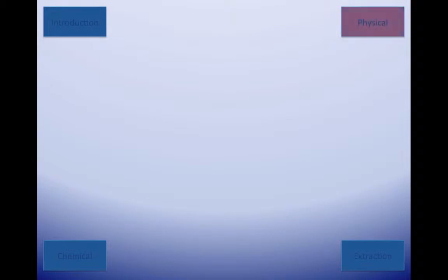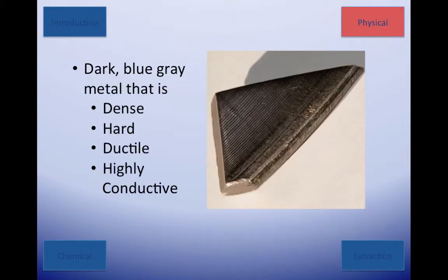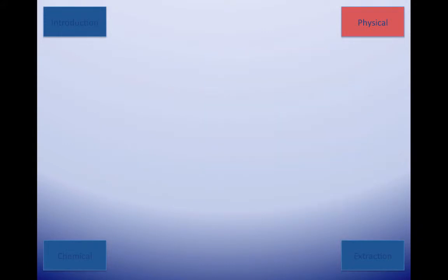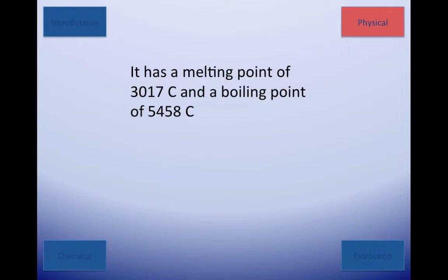Tantalum is a dark blue-gray metal that is dense, hard, ductile, highly conductive, and is very similar to niobium. It is known for its resistance to corrosion by acids below 150 degrees Celsius. It has a melting and boiling point of 3017 and 5458 degrees Celsius, respectively.